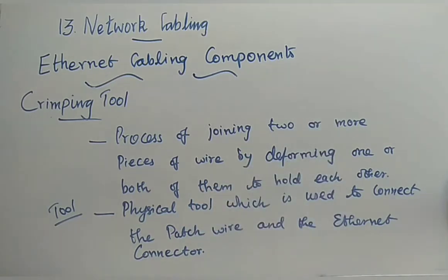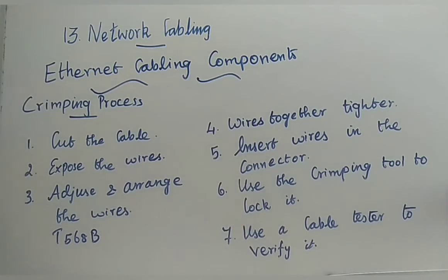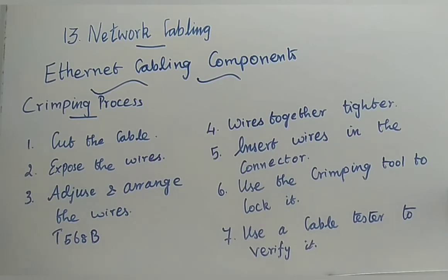Now we will see the crimping process — the steps you follow with your cable, connector, and crimping tool. We have already discussed the definition of crimping and seen the crimping tool. Next is the crimping process: crimping is adjusting your wires so they fit inside the RJ45 connector.